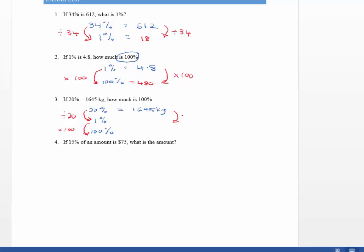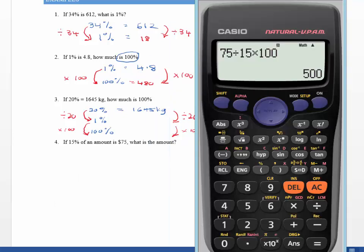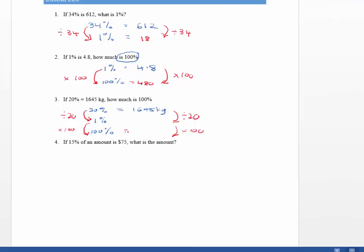What I do to one side, I must do to the other, so I'm going to divide by 20, and times it by 100. So you can get out your calculators, and you can see I have 1,645. I'm going to divide it by 20, and then I'm going to multiply it by 100. And we get our answer, and here it is, of 8,225 kilograms. So that's what 100% is.